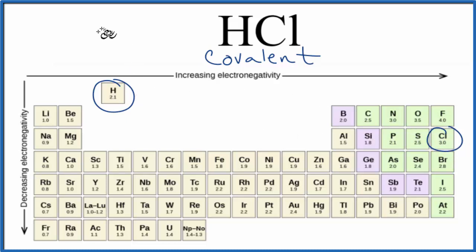So 3.0 minus 2.1, we have a difference of 0.9 in our electronegativity. Chlorine, this side here, is more electronegative. So the electrons that are shared will spend more time around the chlorine atom.